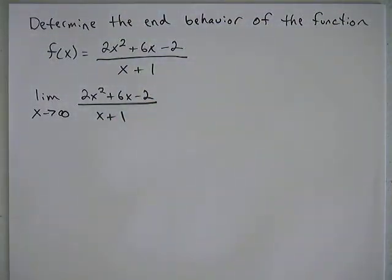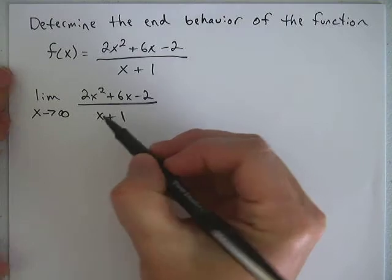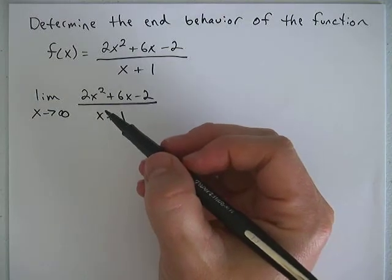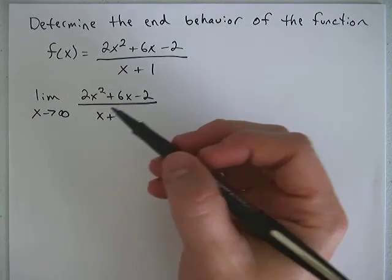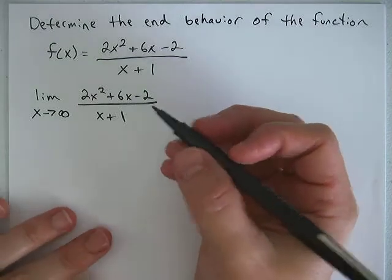So how do we go about taking this limit? You could think of what the function is doing as it's getting larger and larger, and you can see that the top is going to infinity because of the x² term and the bottom is going to infinity because of the x term. So it's basically infinity divided by infinity. So what does that really mean?